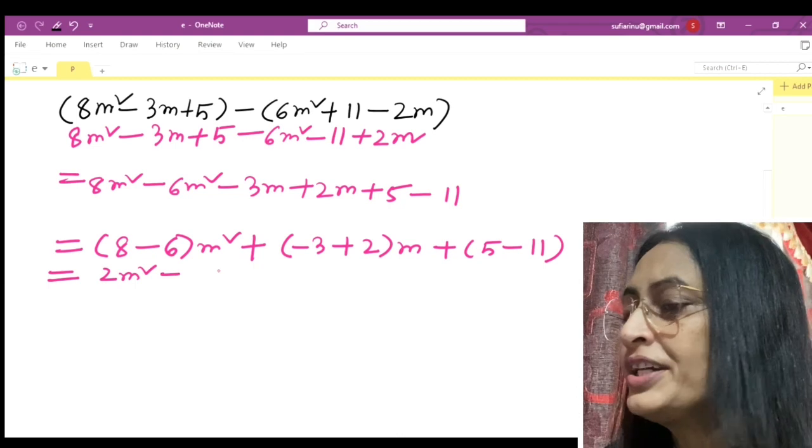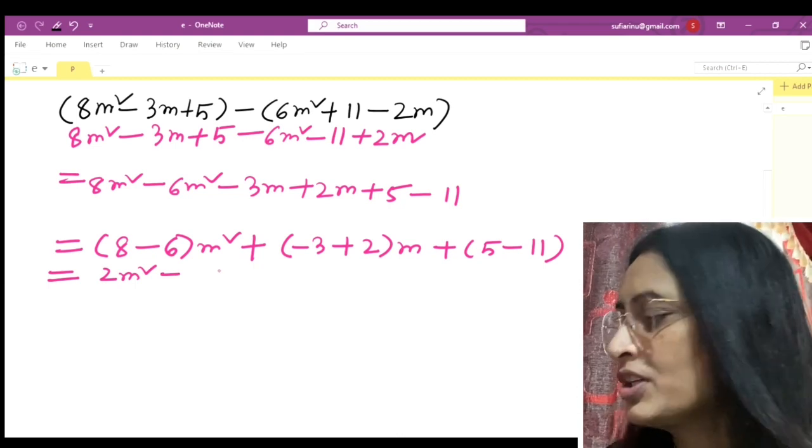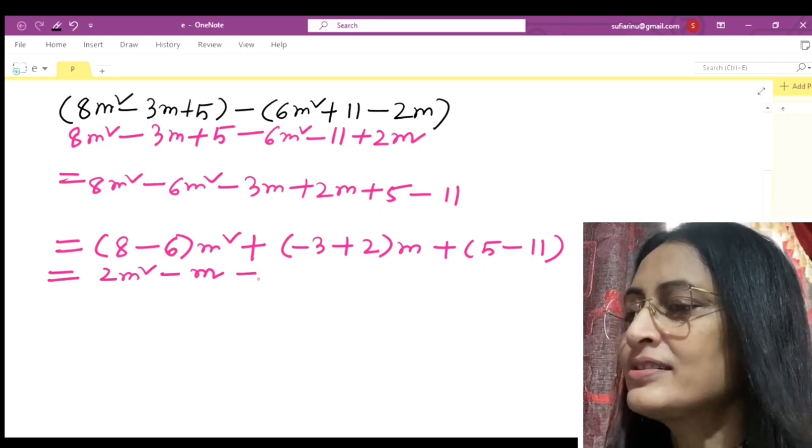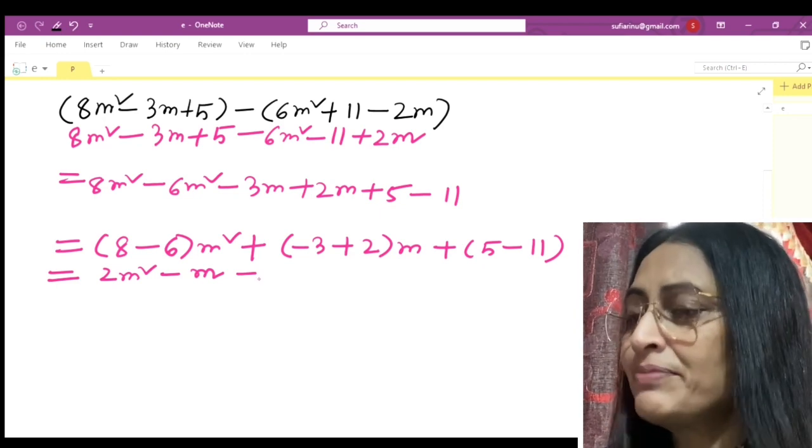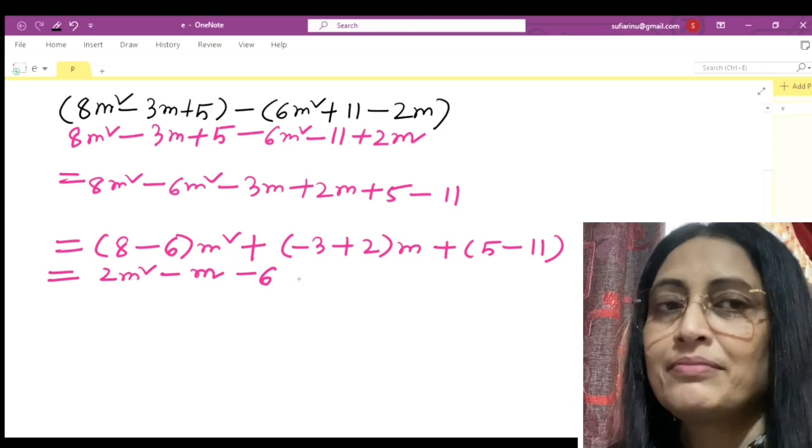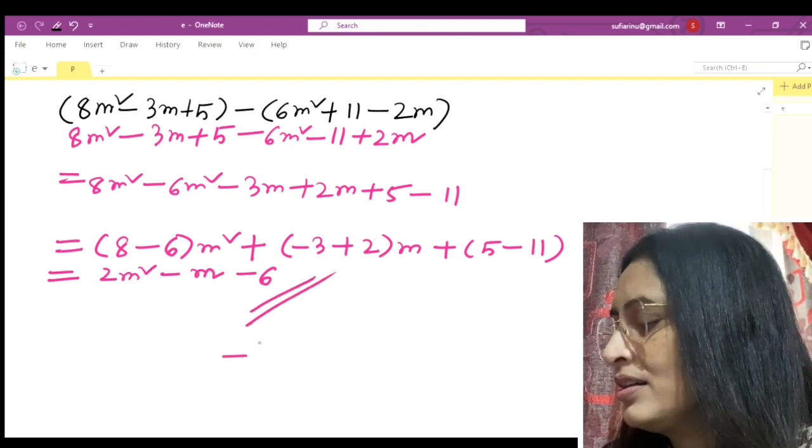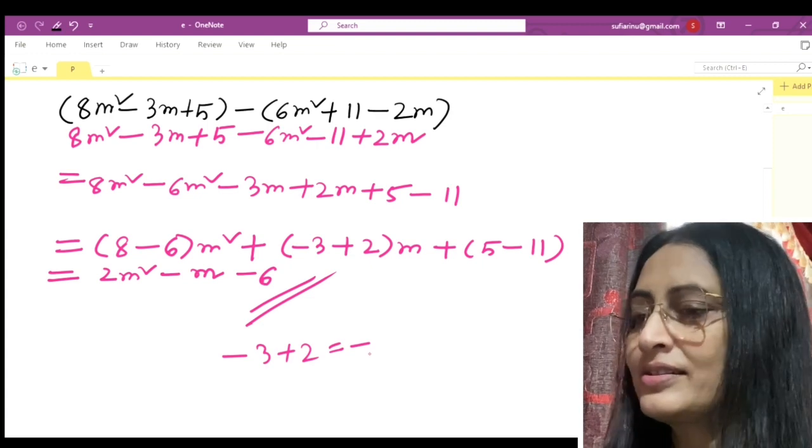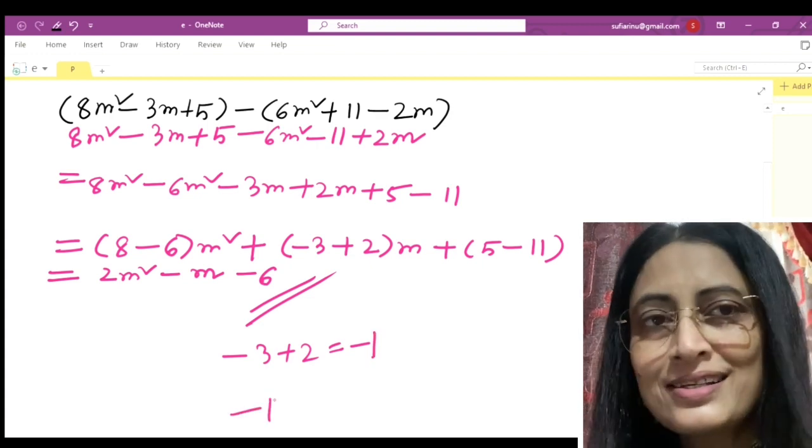Here we will have to write minus 3 plus 2. So 8 minus 6 is 2m square, minus 3 plus 2 is minus m, and plus 5 minus 11 is minus 6. So the answer is 2m square minus m minus 6. This is the answer.